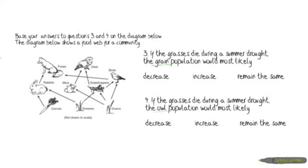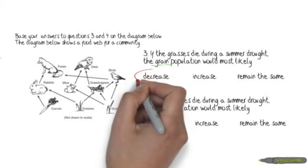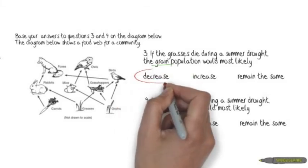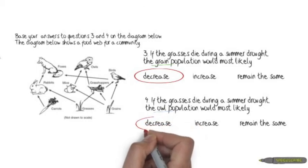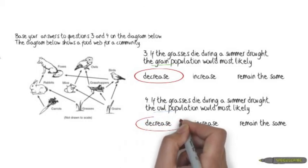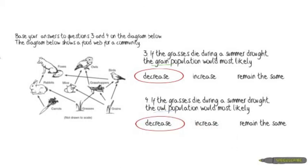The grain population has the same predator as the grasses — the grasshoppers — so it is going to decrease because the grasshoppers will eat more grain now that there is less grass. The owl population also relies on the grasshoppers, and the owl population is also going to decrease because there are fewer grasshoppers.